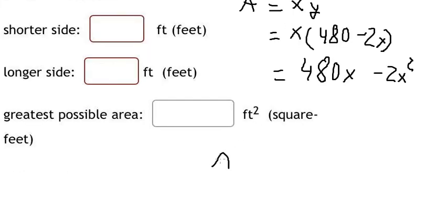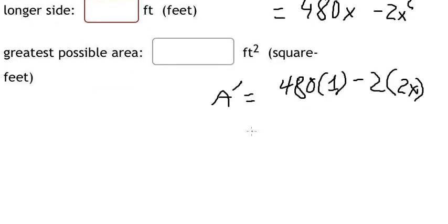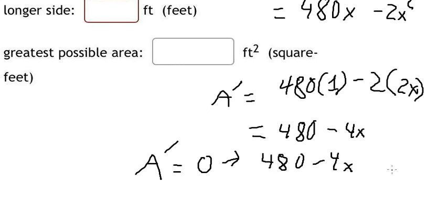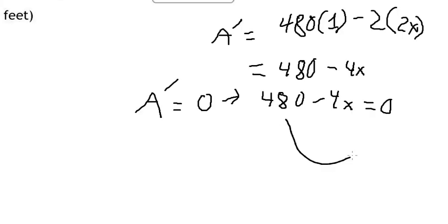Now we need to do first derivative of this one. First derivative with respect to x, we have 480 minus 4x. We put first derivative of the function equal to 0. So we will have 480 minus 4x equal to 0. So this one we put on the right. So we divide both sides by negative 4, and we have 120.